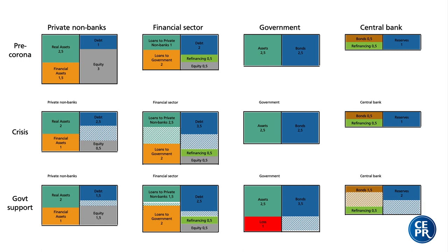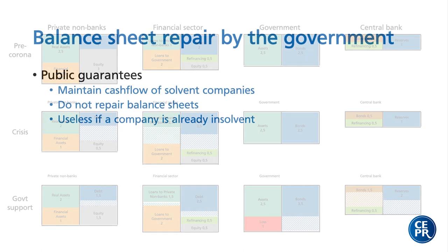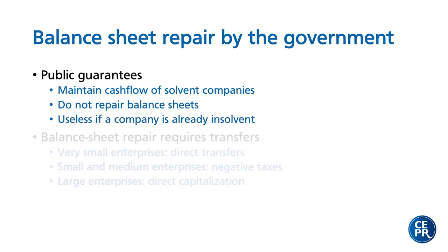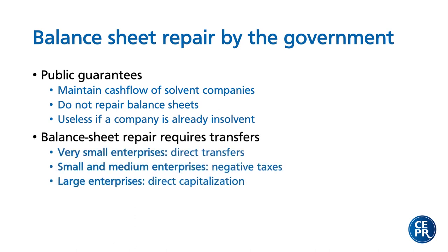How does balance sheet repair by governments function? Right now we observe that in most countries, governments are providing public guarantees to the private sector. This is a kind of first-line defense, which is quite useful, but one has to be clear — this only helps to maintain cash flows of solvent companies. It does not repair balance sheets, and it's useless if a company is already insolvent. Balance sheet repair requires direct transfers from the government to the private sector.